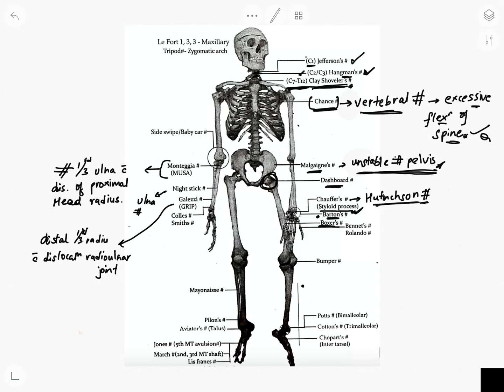Boxer's fracture is the break of the fifth metacarpal bone of the hand near the knuckle; it most commonly occurs in boxers. Bennett's fracture is the fracture of the base of the first metacarpal which extends into the carpometacarpal joint.